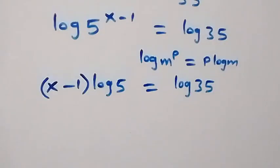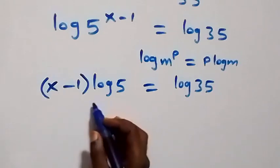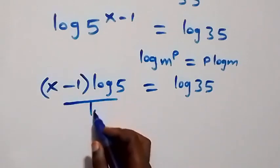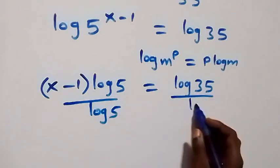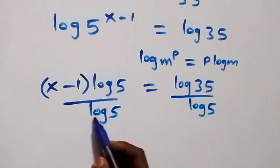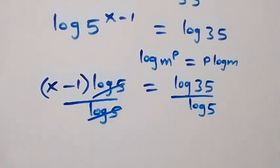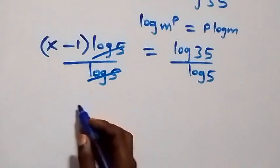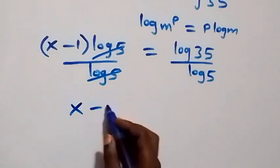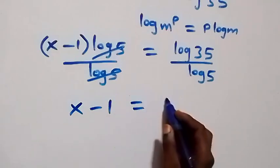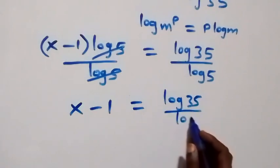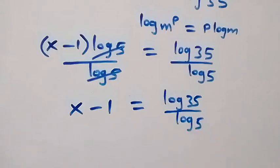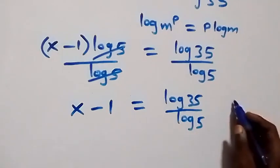The next step is to divide both sides by log 5. Dividing both sides by log 5, the log 5 terms cancel each other, and we are left with x minus 1 equals log 35 over log 5.